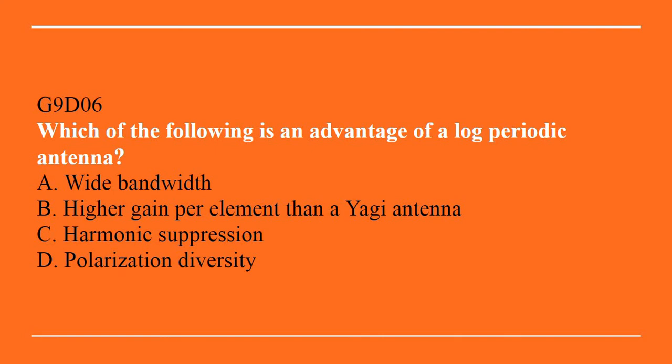G9D06: Which of the following is an advantage of a log periodic antenna? A. Wide bandwidth. B. Higher gain per element than a Yagi antenna. C. Harmonic suppression. Or D. Polarization diversity. The answer is A, wide bandwidth.